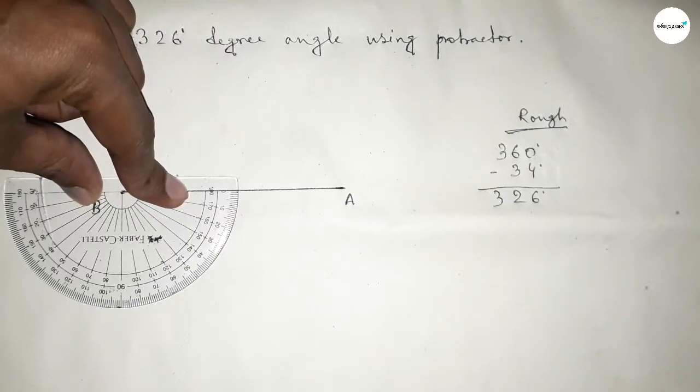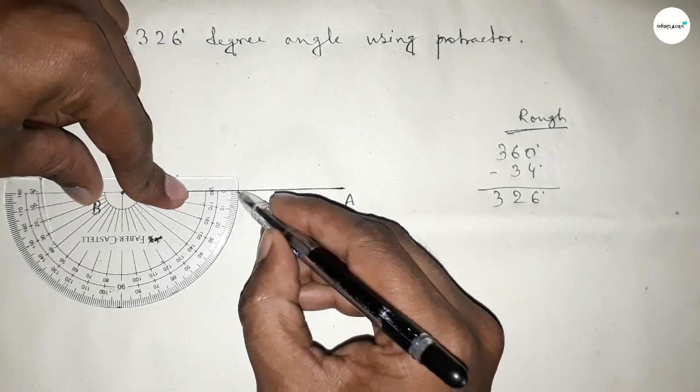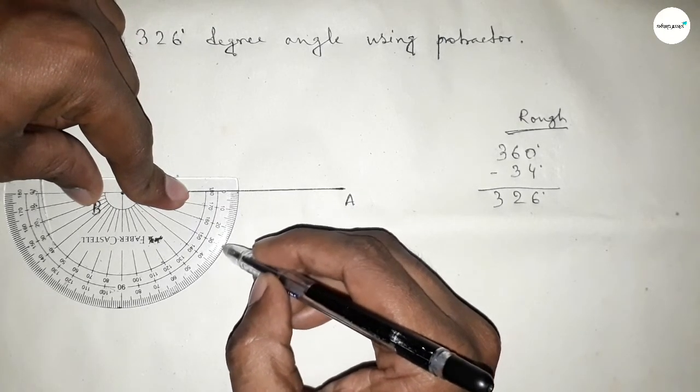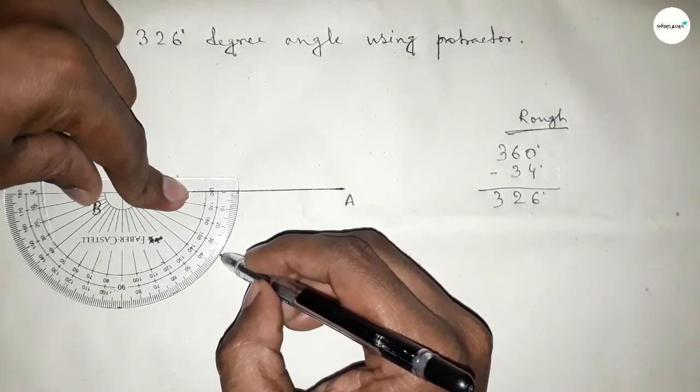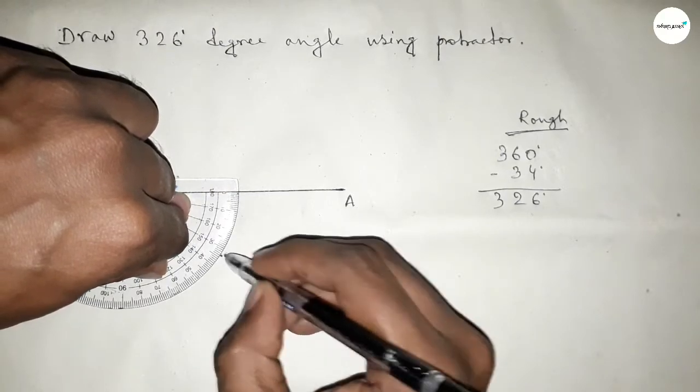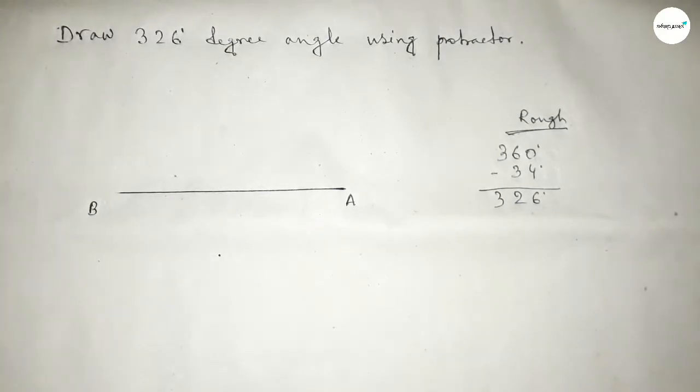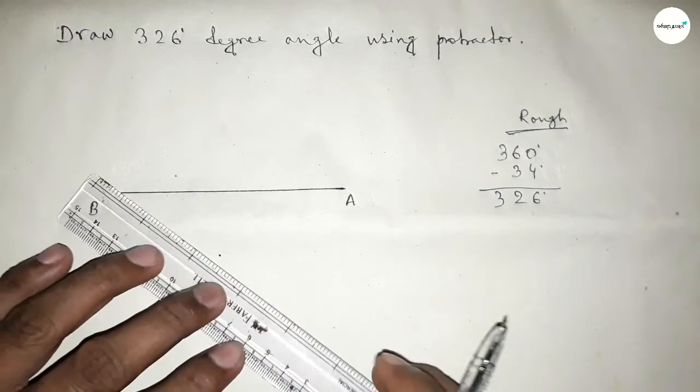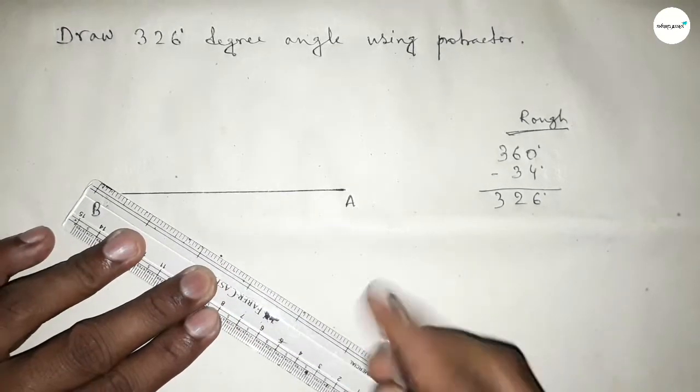Now counting 34 degrees. So this is 10, 20, 30, 31, 32, 33, 34. So this is 34 degrees. If you subtract 34 degrees from 360, then we get 326 degrees.